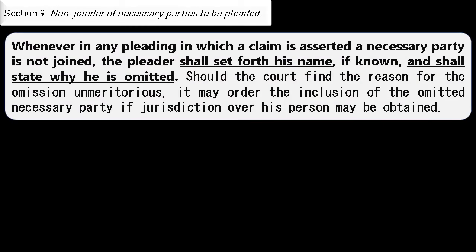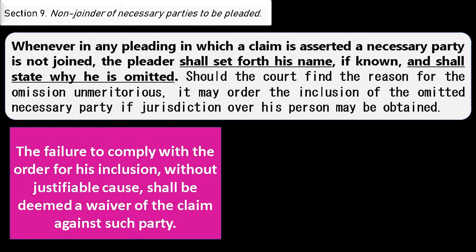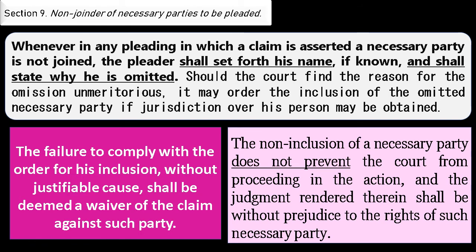Section 9, non-joinder of necessary parties to be pleaded, is a bar exam favorite asked countless times. Whenever a necessary party is not joined, the pleader shall set forth his name if known and state why he is omitted. If the court finds the reason unmeritorious, it may order inclusion of the omitted necessary party only if jurisdiction over his person may be obtained. Failure to comply with the order shall be deemed a waiver of the claim against such party. Non-inclusion of a necessary party will not prevent the court from proceeding, and the judgment shall be without prejudice to the rights of such necessary party.